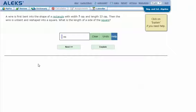Here's an example problem. A wire is first bent into the shape of a rectangle with width 5 centimeters and length 13 centimeters. Then the wire is unbent and reshaped into a square. What is the length of a side of the square?